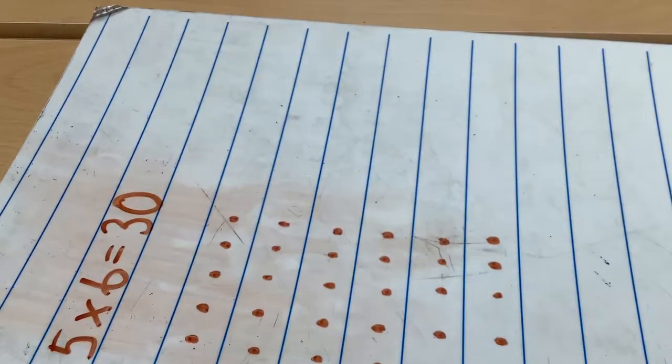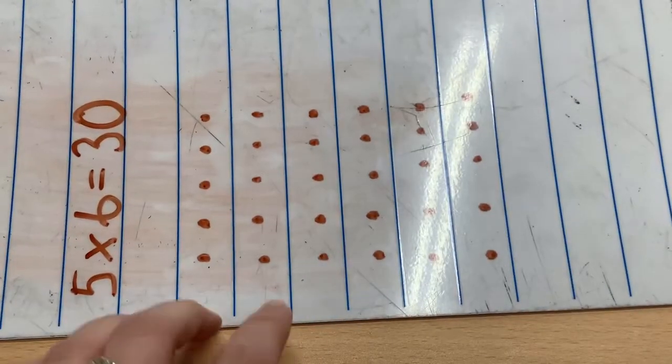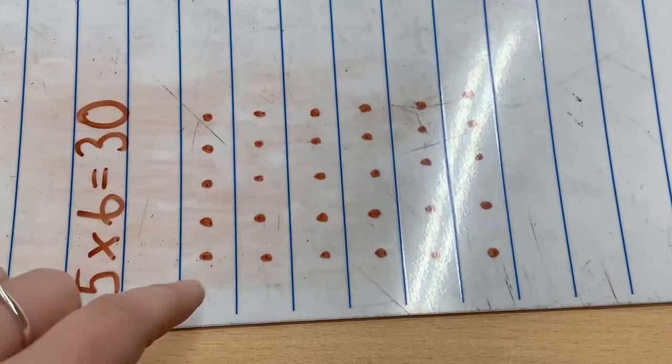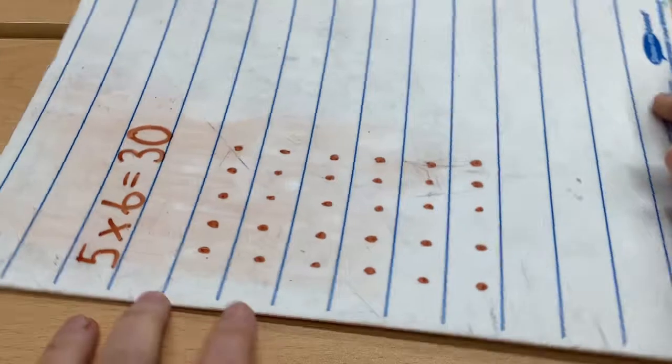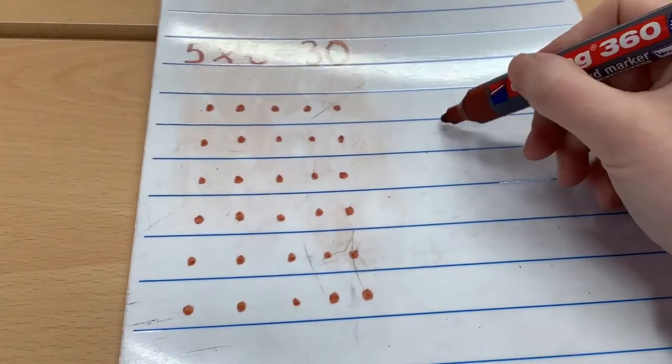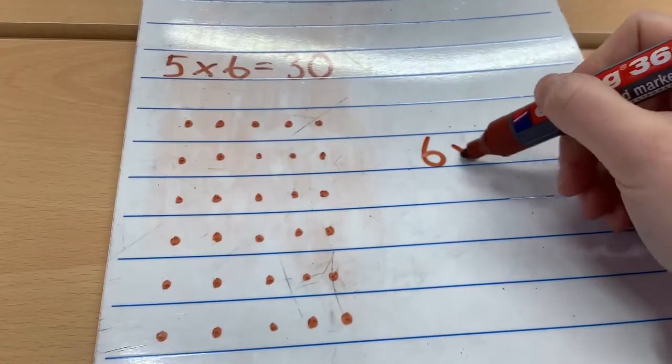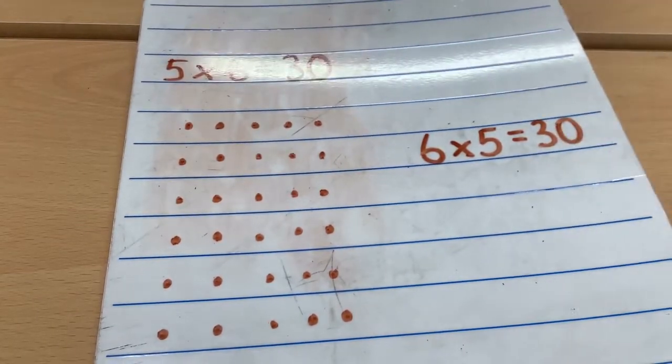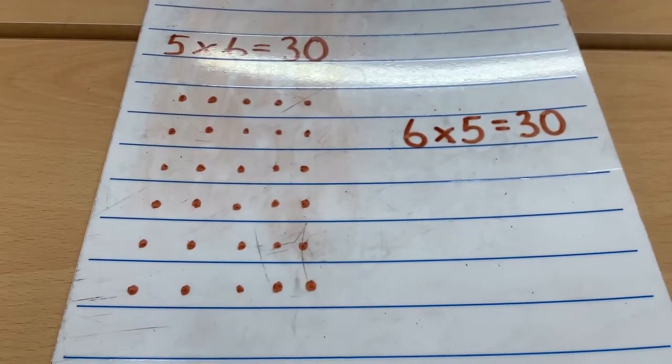And if I flip my array, this time I've got 6 five times. So my next equation would be 6 multiplied by 5 equals 30, because I've still got the same number of dots.